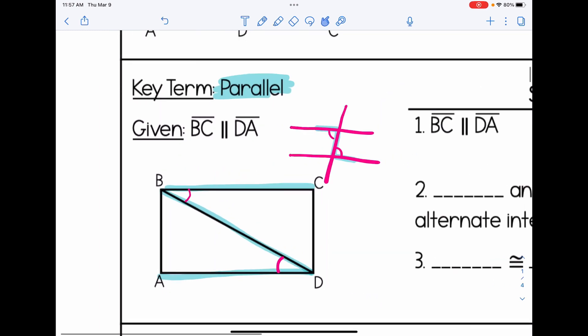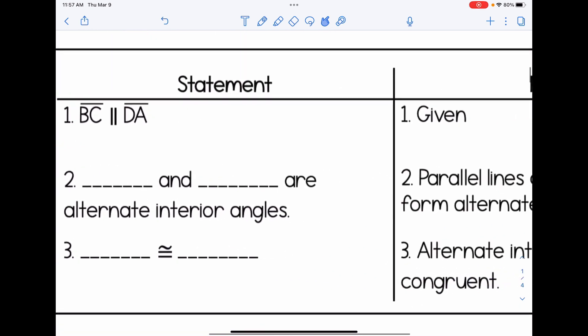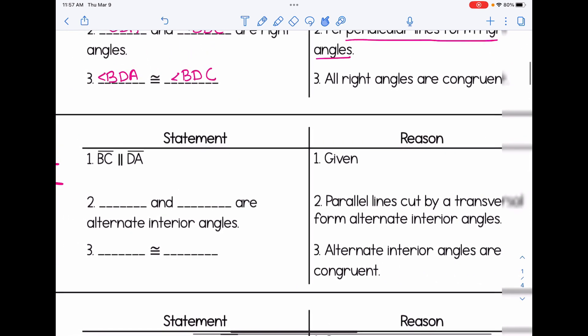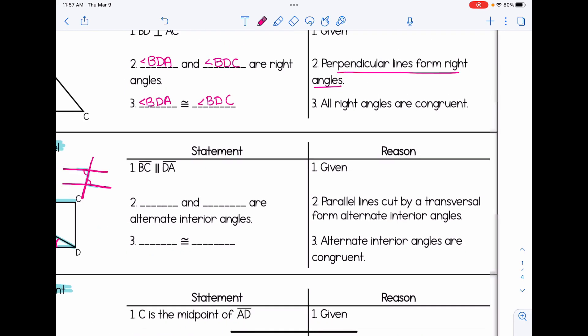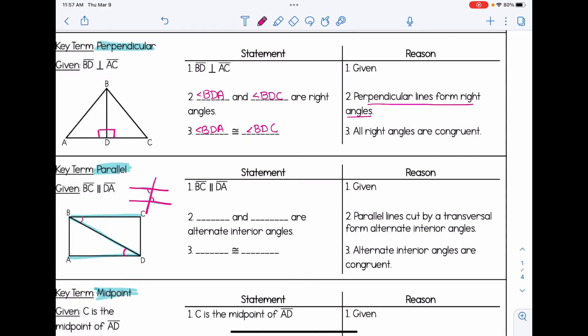So based on that, we're going to formalize all of this information in a proof format. BC is parallel to DA that's given to us. Then we know that angle ADB and angle CBD are alternate interior angles because parallel lines cut by a transversal form alternate interior angles. And we know those angles are congruent because alternate interior angles are congruent.